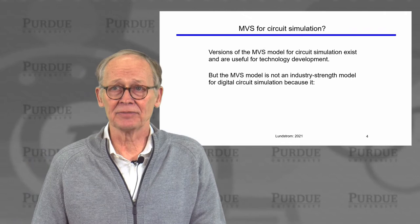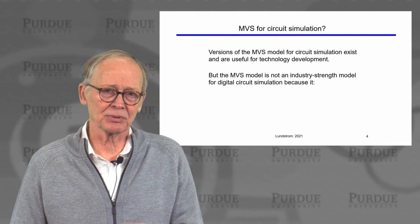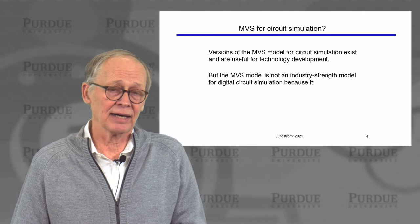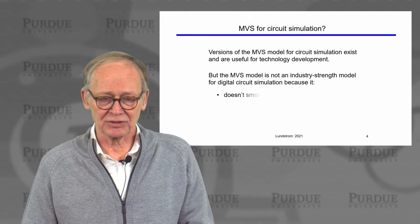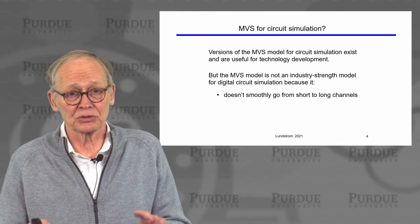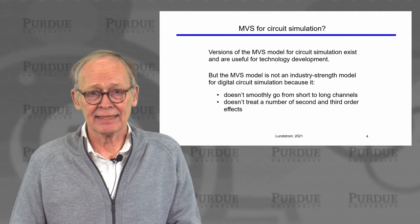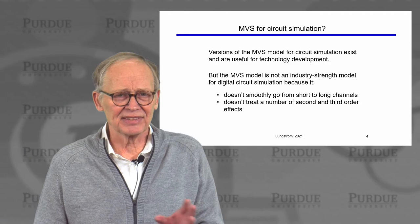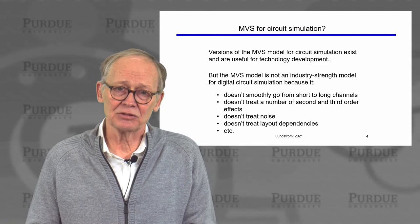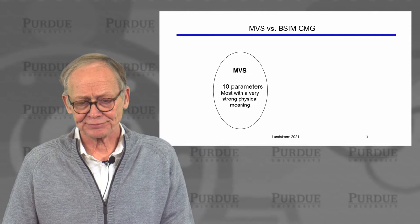You might ask whether we could use the MVS model as our core model. There are versions of the MVS model used for circuit simulation, but they tend to be used for simple circuits and simple applications — primarily in exploratory research and development — to look at what the impact of a new transistor technology might be on an application. But it's not an industry-strength comprehensive model for a number of reasons. One is that it's a model for short-channel transistors; it does not describe long-channel transistors and doesn't go smoothly from long to short channel. That's needed because we'll have transistors of different channel lengths in a typical circuit. There are also many second- and third-order physical effects that it doesn't treat: it doesn't treat noise, and it doesn't treat the various dependencies on layout.